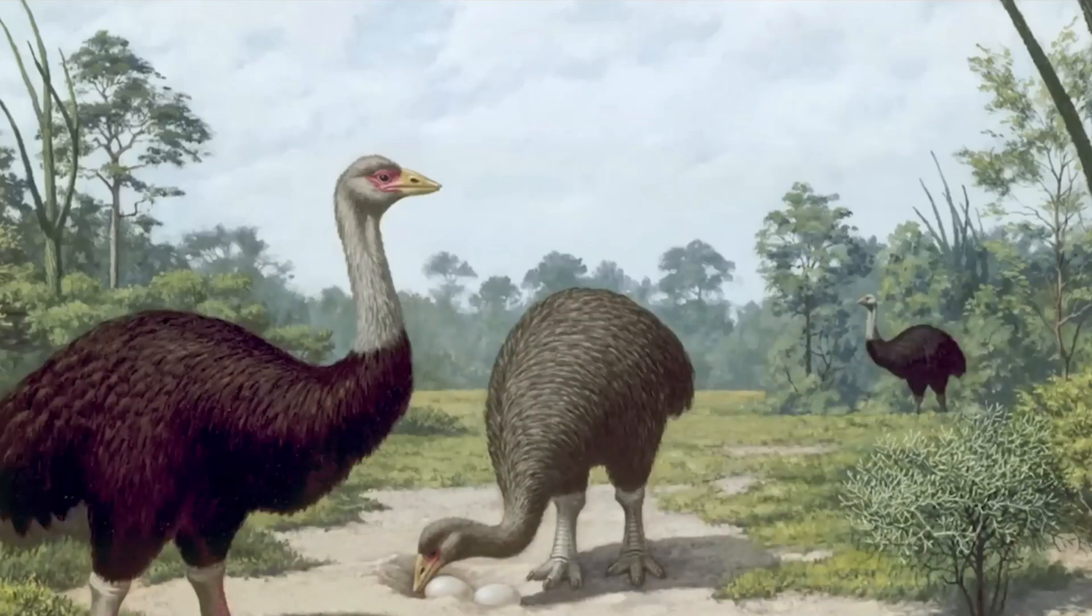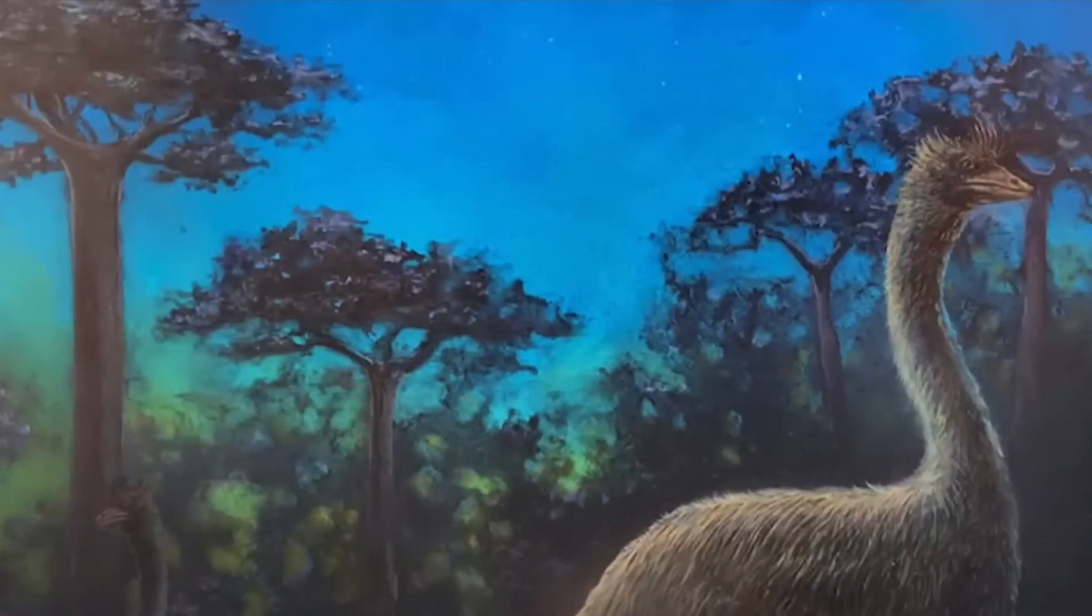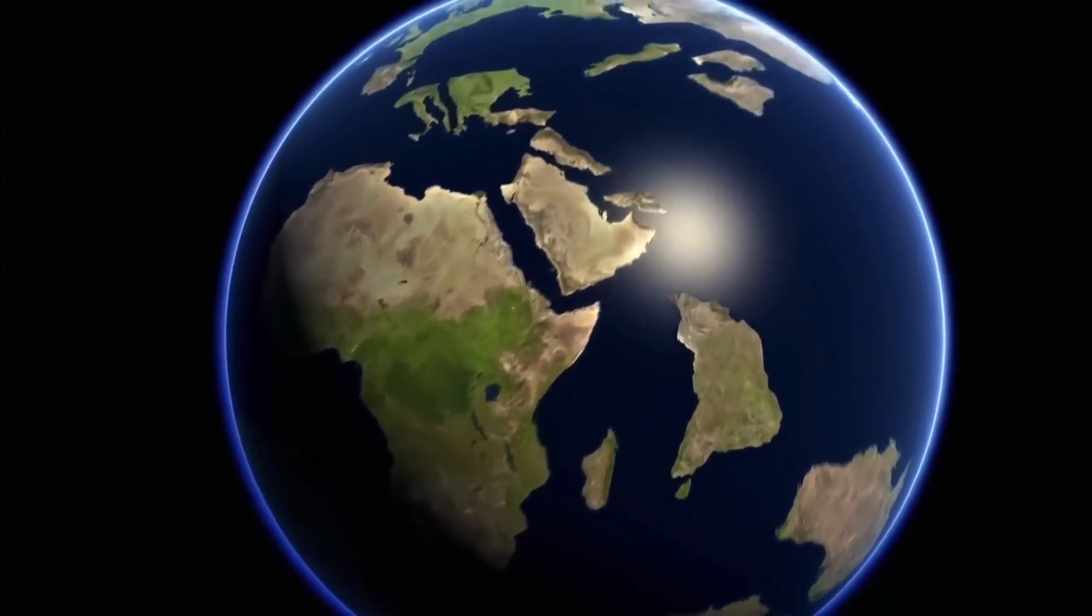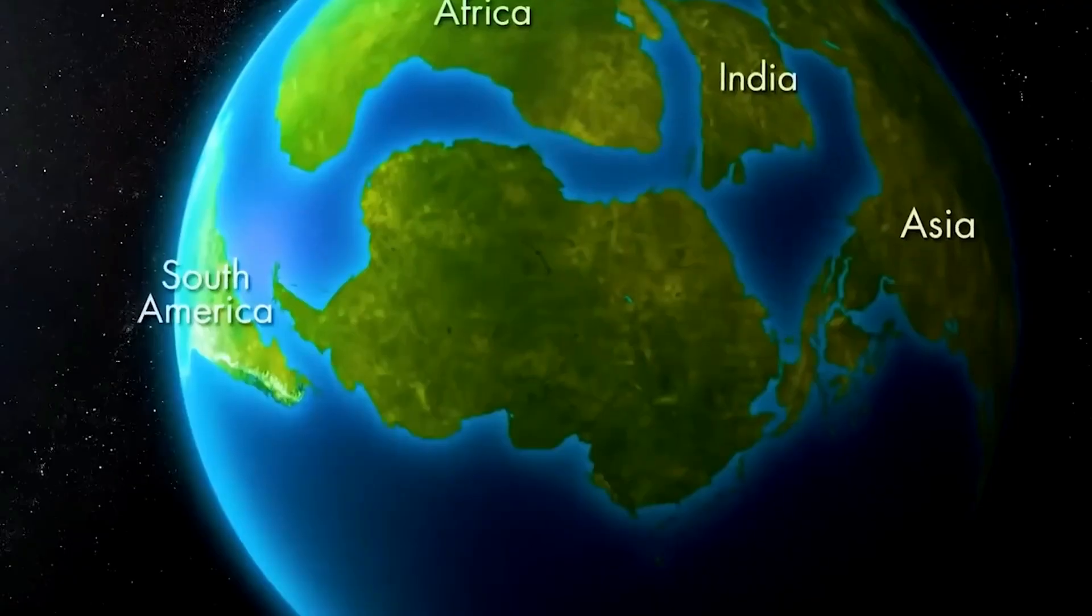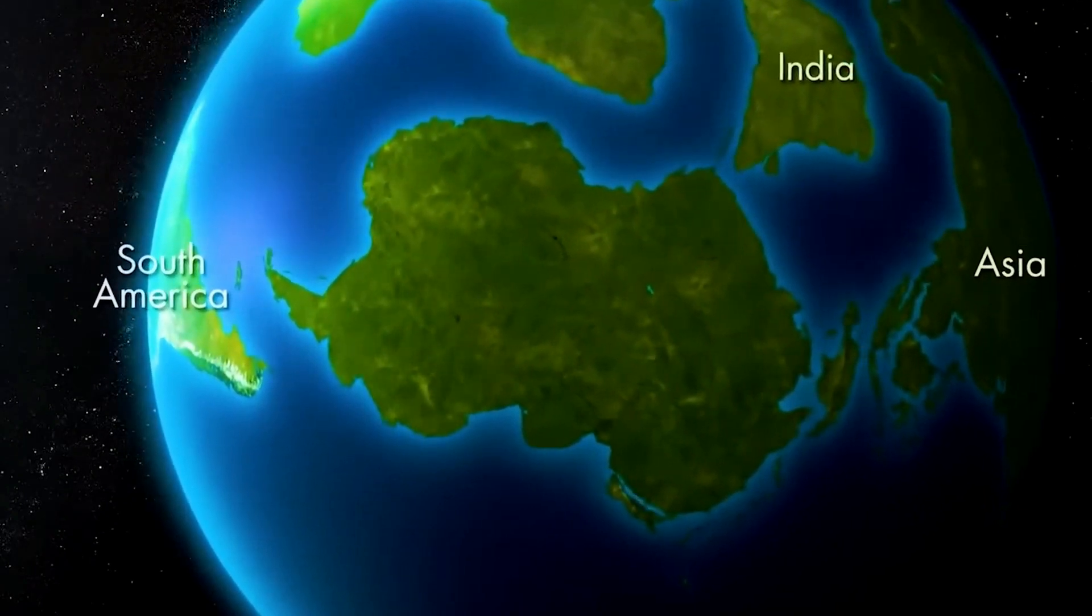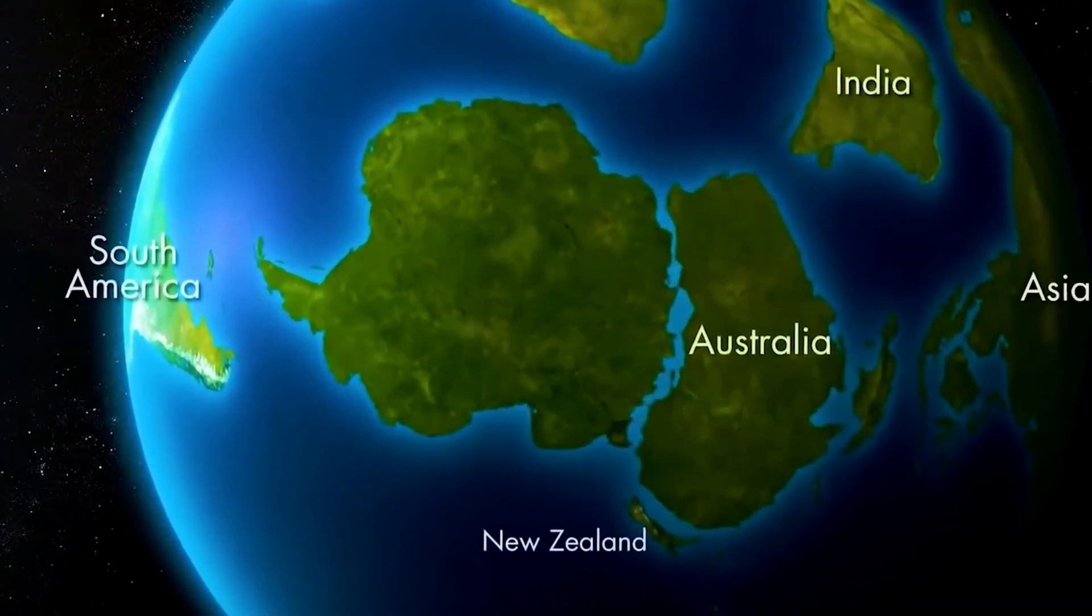It took 130 million years for Gondwana to entirely collapse, but once it did, it left behind pieces that eventually became South America, Africa, Madagascar, Antarctica, Australia, the Arabian Peninsula, the Indian subcontinent and Zealandia.